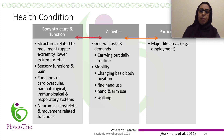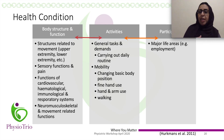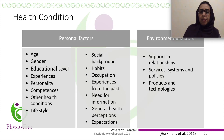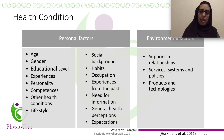Here are examples of the areas tackled in each ICF domain. Under body structure and function, we look at sensory function, pain, cardiopulmonary function, and more. Under activities, we look at tasks and activities of daily living. Under participation, we look at major life areas like employment and social roles. Personal factors include age, gender, and education level. Environmental factors include support systems and living situation.